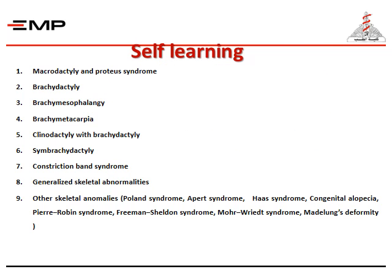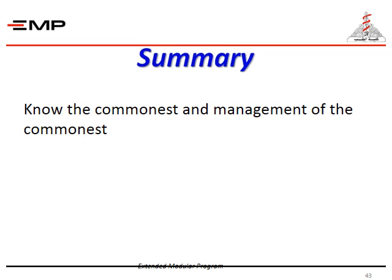Here are some topics for self-learning: macrodactyly, brachydactyly, brachymetacarpia, clinodactyly, symbrachydactyly, constriction band syndrome, generalized skeletal anomalies, and other skeletal anomalies of the hand. Please make sure to know the commonest anomalies and their management. Thank you.